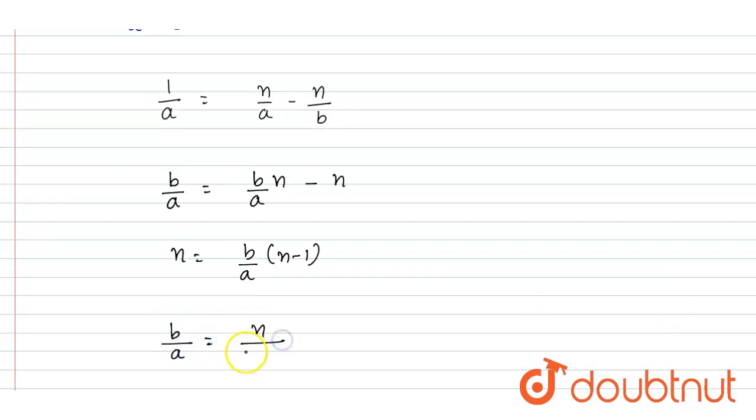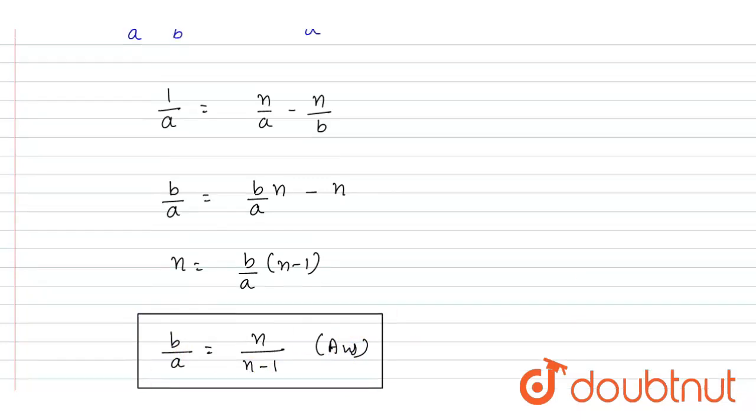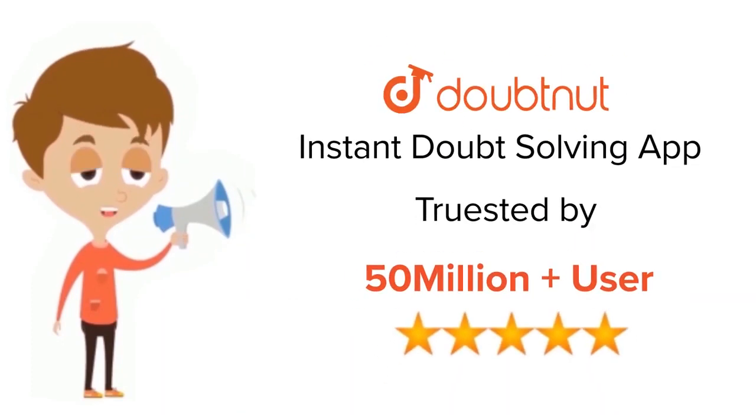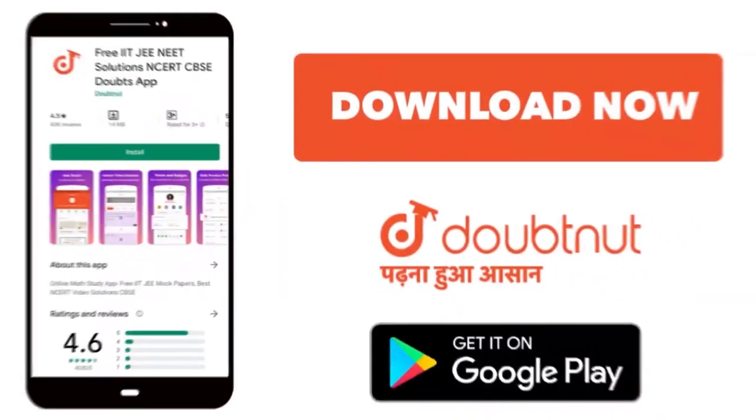And this is the answer of this question. Now you can check for the option, n upon (n minus 1) is the correct one. So b here is the correct answer. Thank you. For class 6th to 12th, IIT-JEE and NEET level, trusted by more than 5 crore students, download Doubtnet app today.